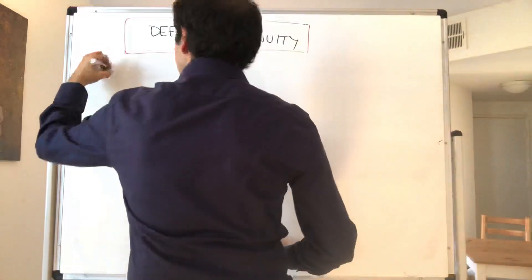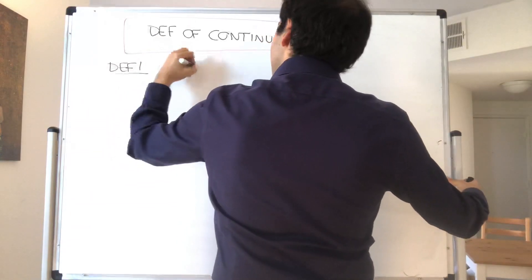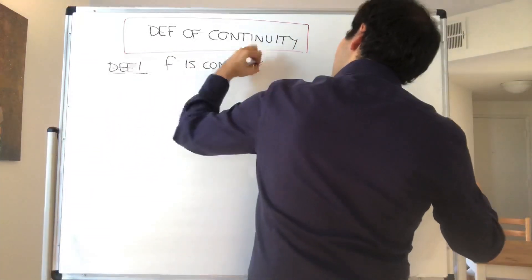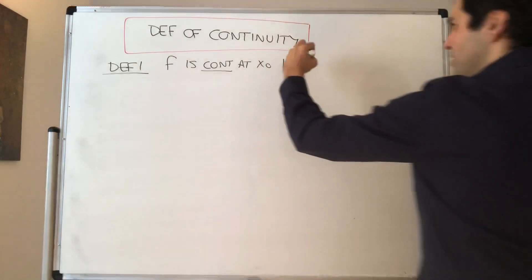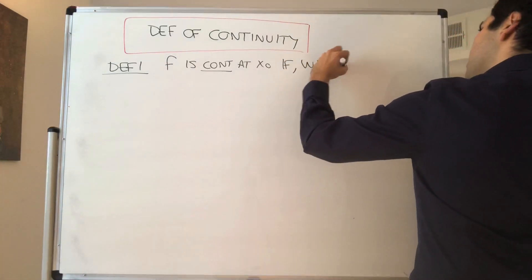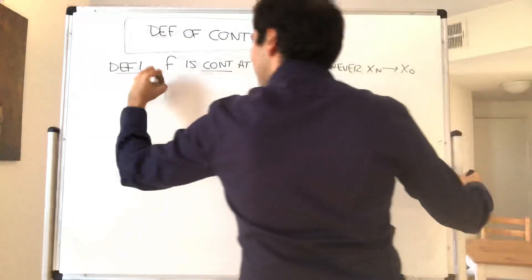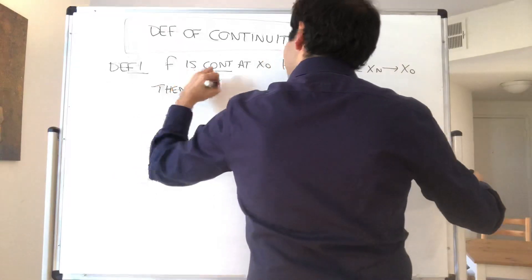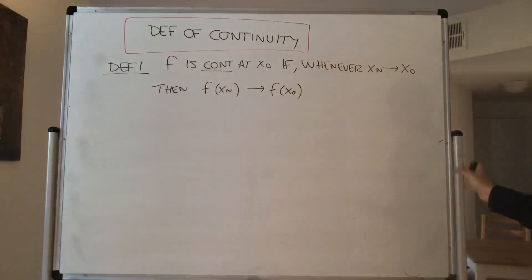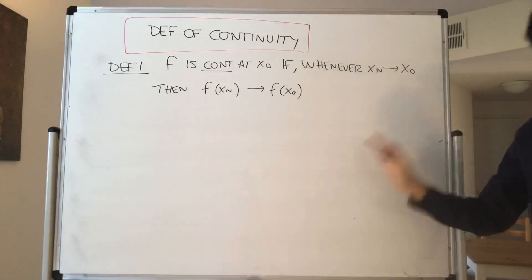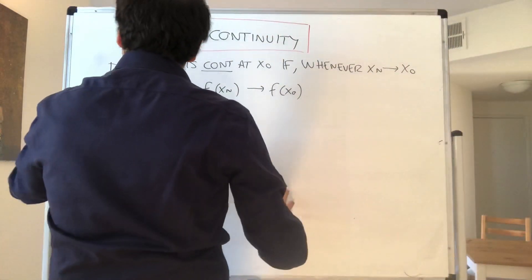Let me remind you of the definitions. The first definition is that f is continuous at x naught if whenever you have any sequence xn converging to x naught, then f of xn goes to f of x naught — assuming xn is in your domain, etc.